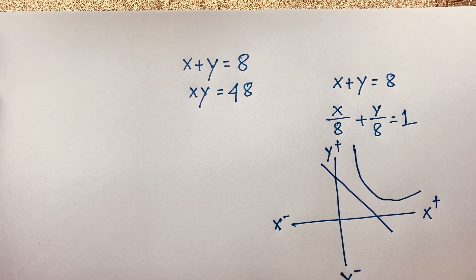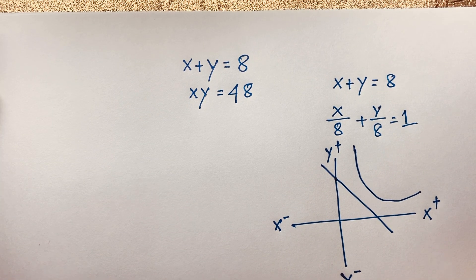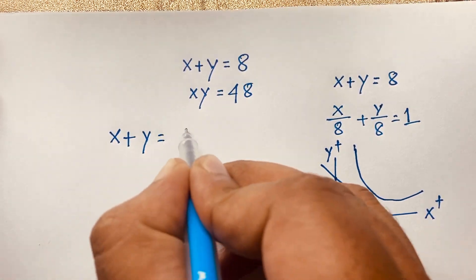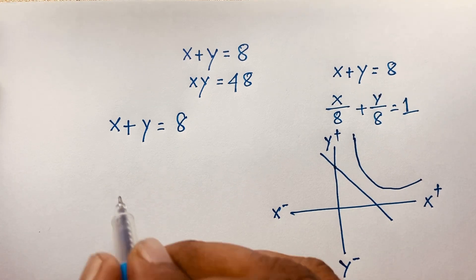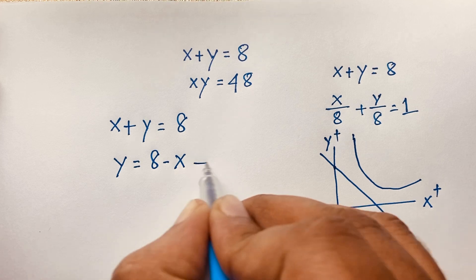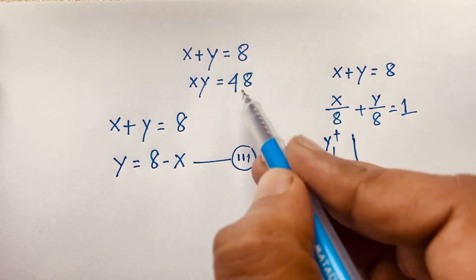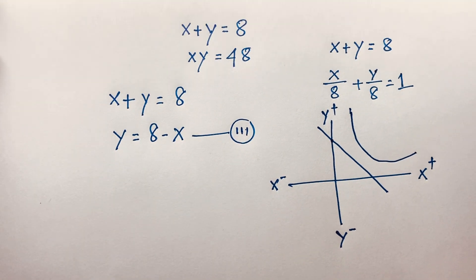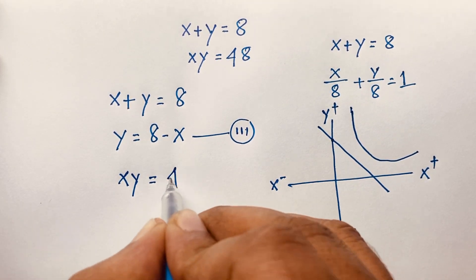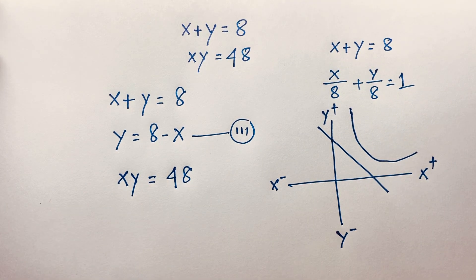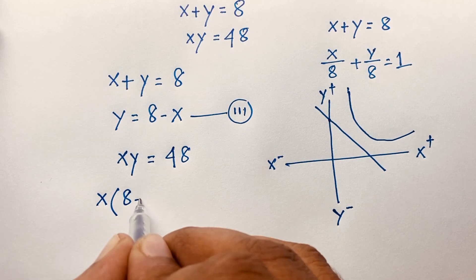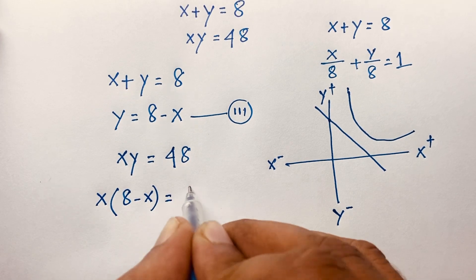So let's start. Our question is X plus Y is equal to 8 — this is our first equation. X times Y is equal to 48 — this is our second equation. Now you can see that Y is equal to 8 minus X — this is our third equation. Now, X times Y equals 48, and we know that Y is equal to 8 minus X. So if I substitute this into the expression, you can see that X times (8 minus X) is equal to 48.